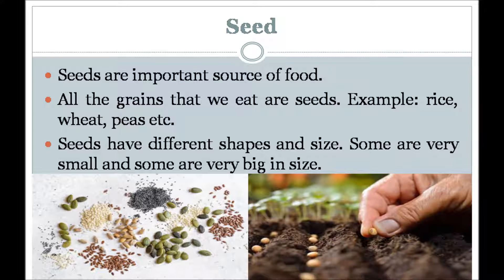Seeds are an important source of food. All the grains that we eat are seeds — for example, rice, wheat, gram, kidney beans and peas. Seeds are of different shapes and sizes. Some seeds like tura and mango are big in size, while seeds of mustard and cumin are very small. Seeds of some plants that can be eaten are called edible seeds, while seeds of certain plants that cannot be eaten are called inedible seeds.